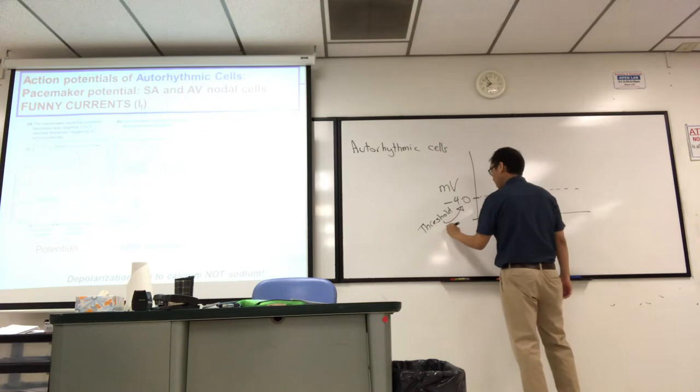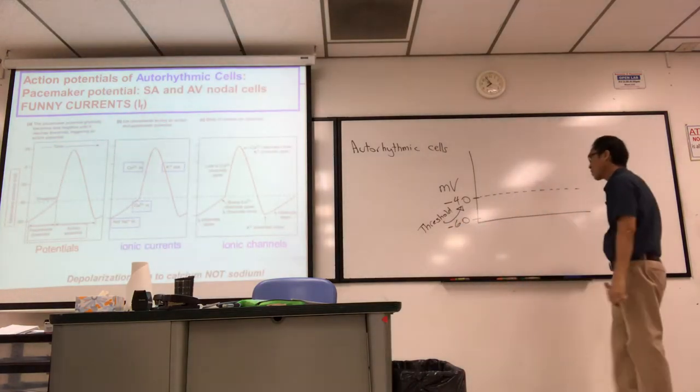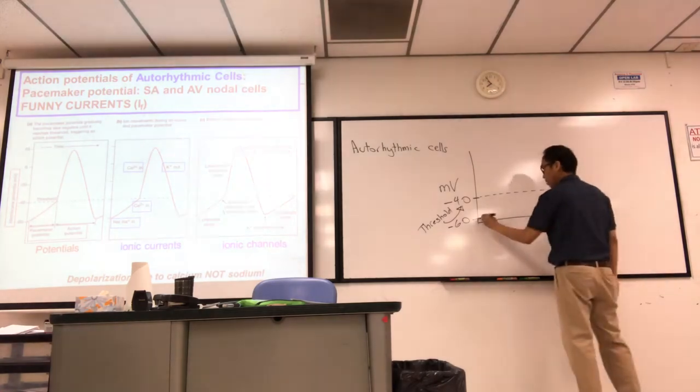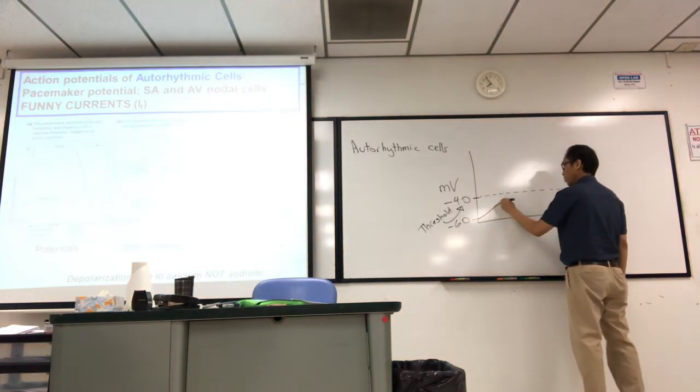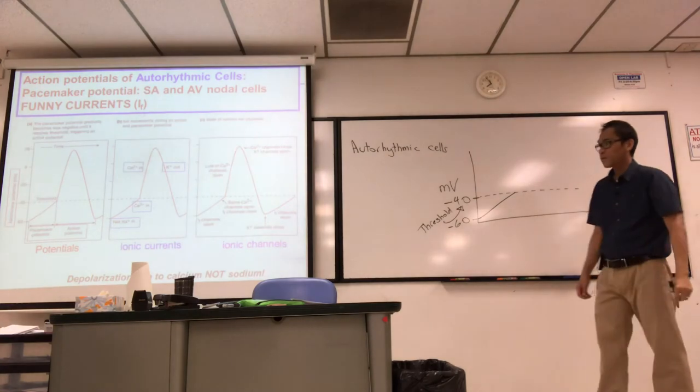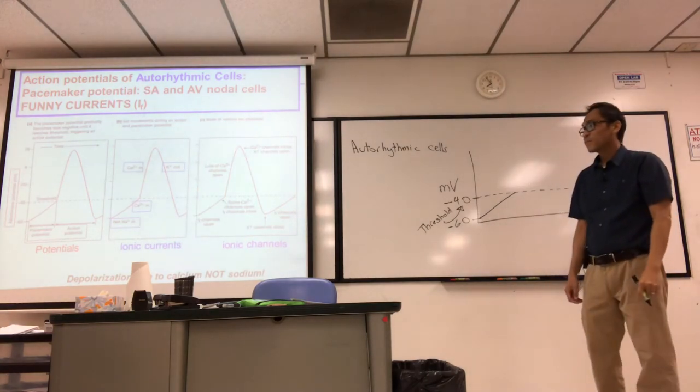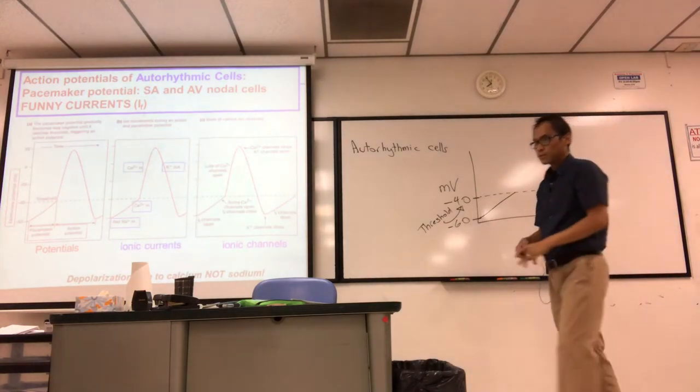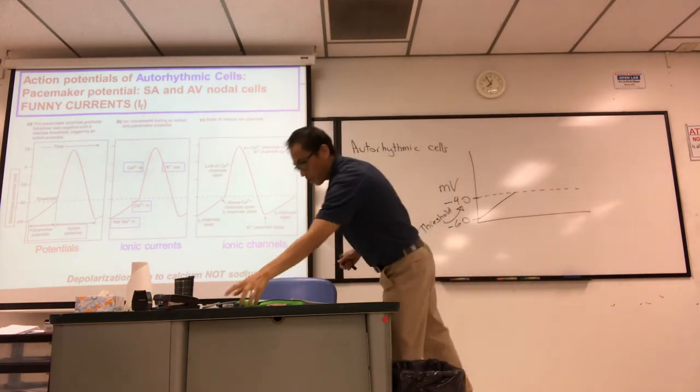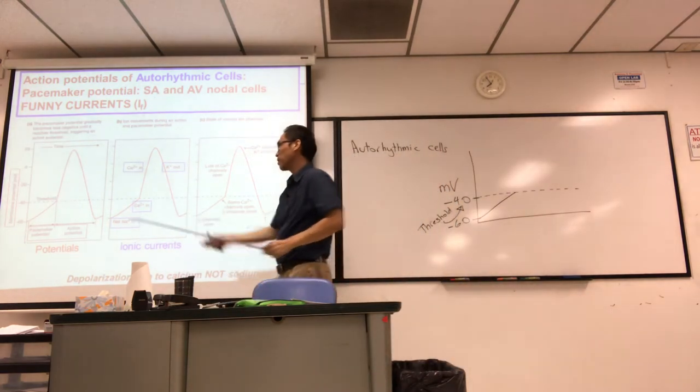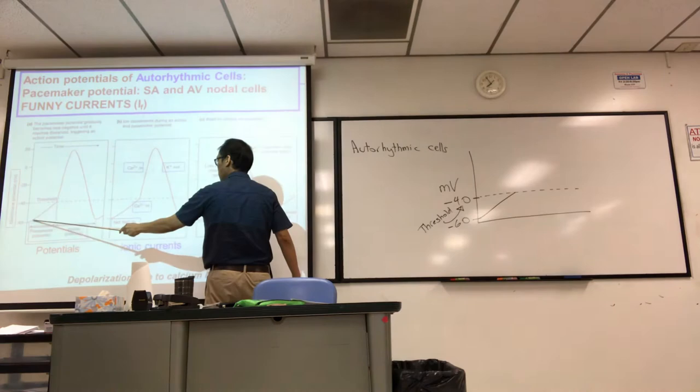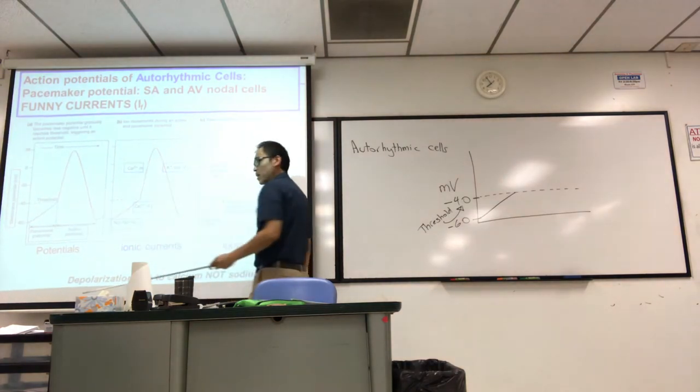And the resting membrane potential, well it's not really rest, but I'll just start at maybe negative 60 there. And as a cell slowly depolarizes to threshold, what they tell you in the first slide, if you look where it says pacemaker potential, you can point to what I'm talking about. This part there, what I just drew, that is the pacemaker potential.